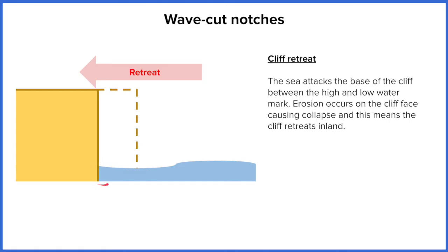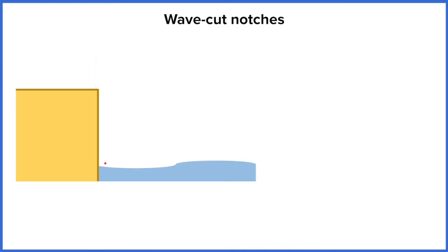Hydraulic action and abrasion create a curved notch — a curved divot or indent — at the bottom of the cliff, and that's the wavecut notch. This is signified by the darker color, the indentation into the rock. The water comes in here, hydraulic action compresses air and forces cracks to become larger.